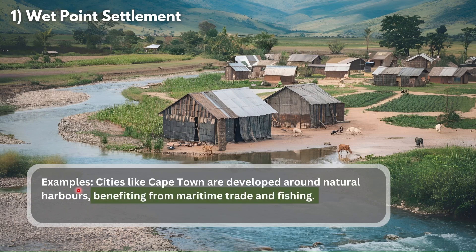What are modern day examples of wet point settlements? Cities like Cape Town are developed around natural harbors, benefiting from maritime trade and fishing.